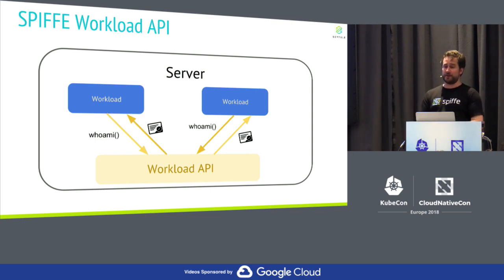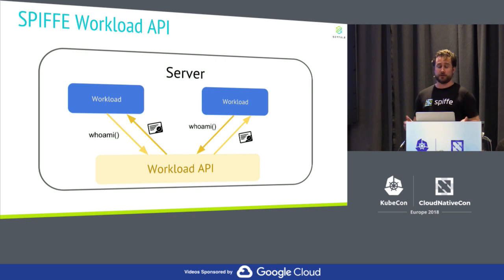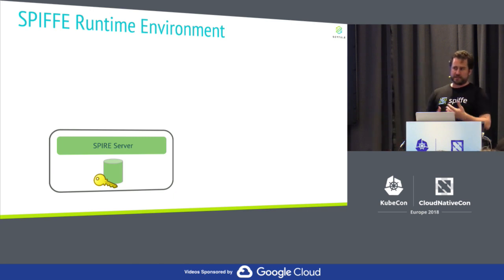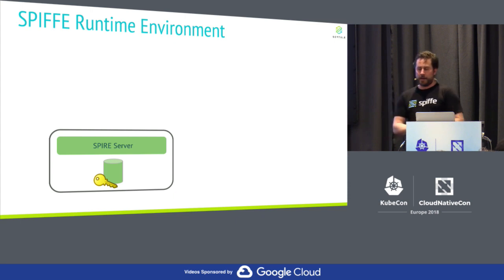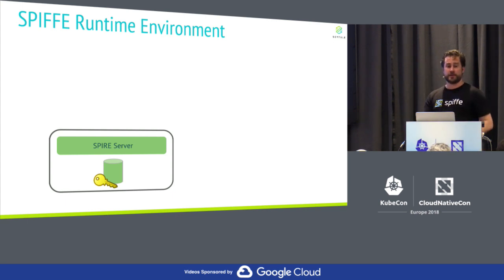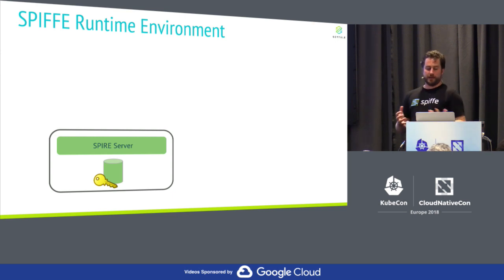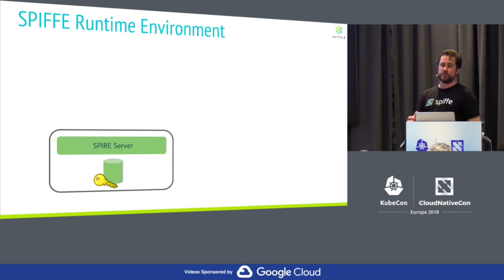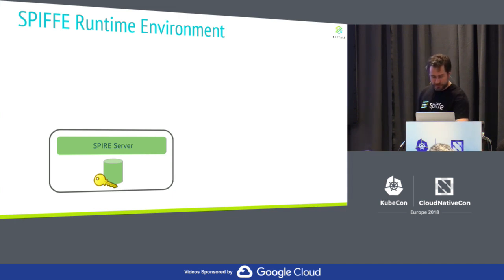The workload calls the Workload API. The infrastructure behind it is responsible for figuring out who this workload is. The Workload API verifies who it is, and if it can identify the workload, it sends back the SPIFFE ID along with short-lived documents and keys the workload can use to prove that identity to other systems. It also returns a certificate bundle — a set of certificates that allows it to verify the identities of any other suitably SPIFFE-enabled running workload. These are just X.509 certificates, so if you have X.509-compliant client libraries, you can use them for TLS connections or to sign a JWT token.